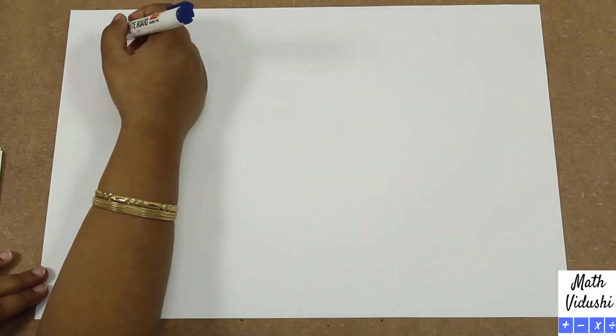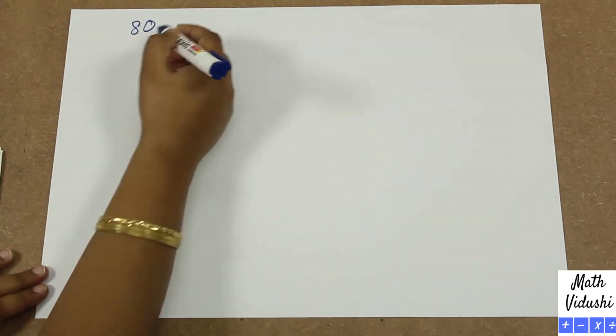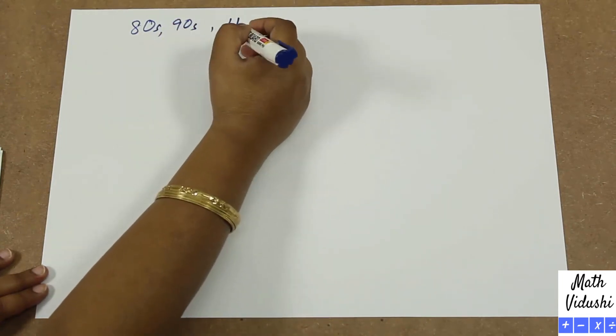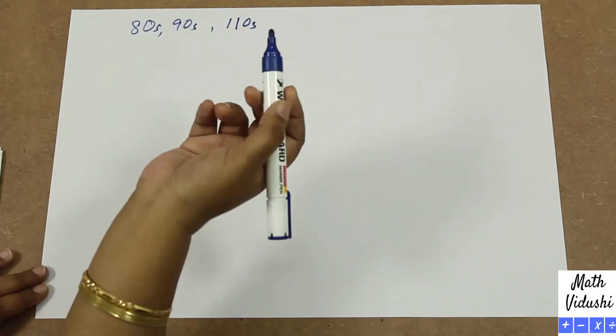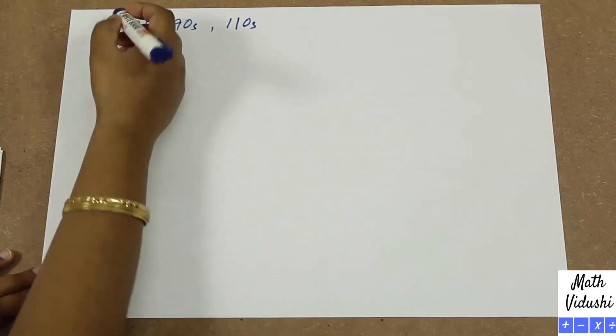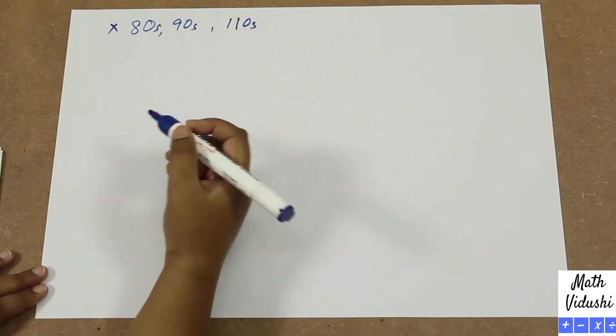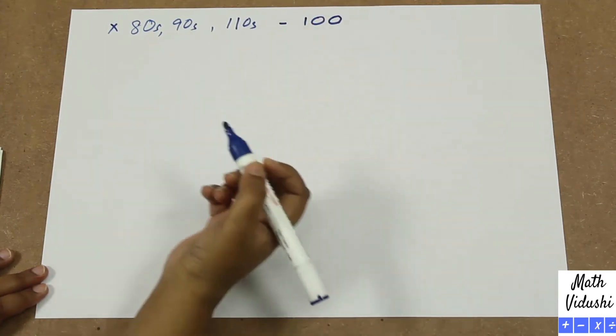In this section we are going to learn how to multiply quickly numbers that are relatively near hundred, say numbers in eighties or nineties or hundred and tens. So these numbers when you multiply, you can quickly multiply using the fact that they are very near the base hundred.